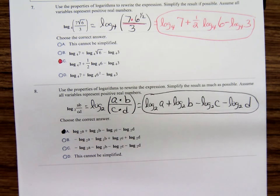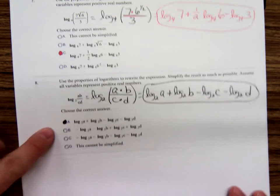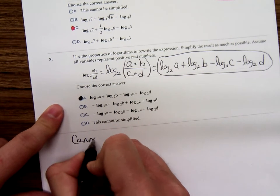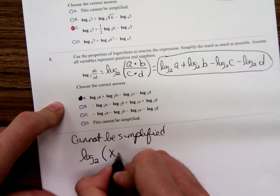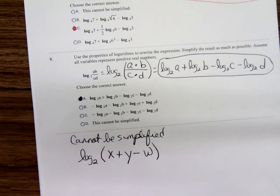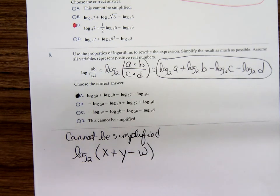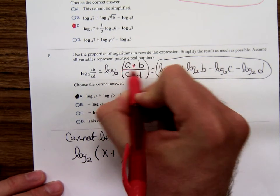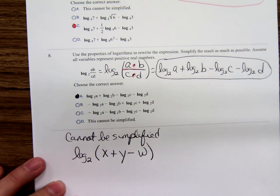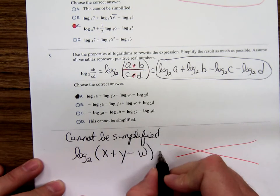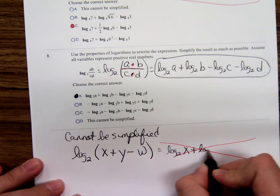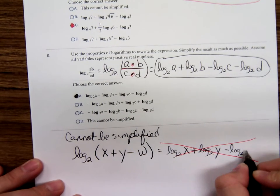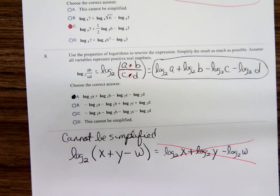We keep seeing the option 'cannot be simplified.' Here's one that cannot be simplified: log base 2 of (x plus y minus w). That can't be simplified because you can't separate it — you separate at multiplication and division, not at addition and subtraction. A wrong answer students write is trying to distribute the log base 2 across the terms, which is wrong. Log base 2 is a function; you can't distribute it the same way you would multiplication of numbers. That's why on multiple choice it gives you the option 'cannot be simplified.' Let's take a break.